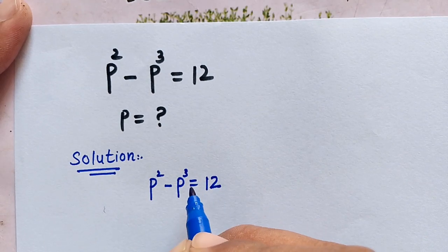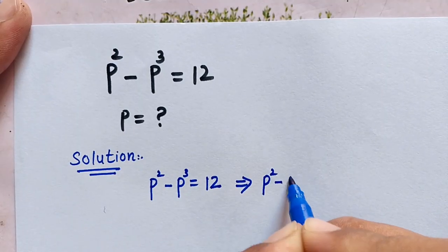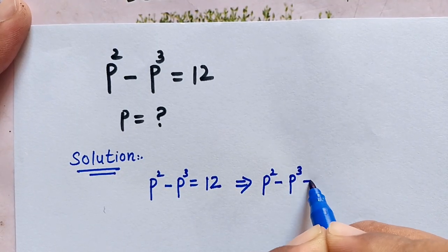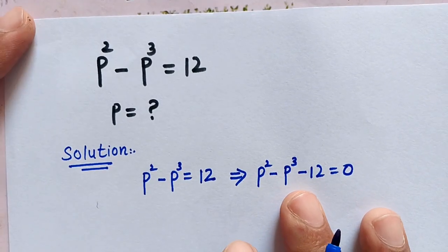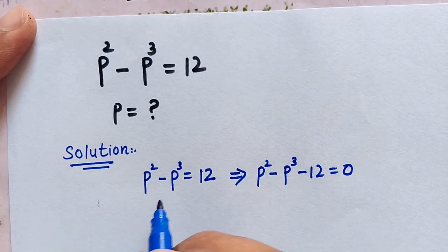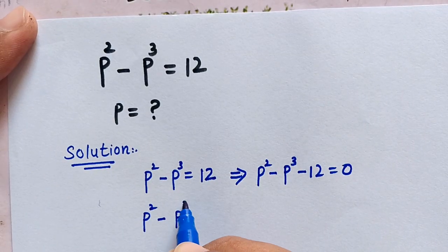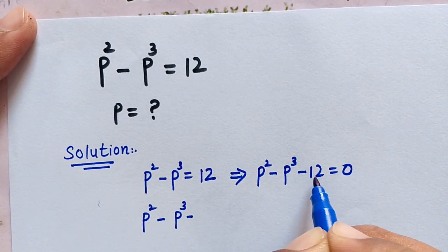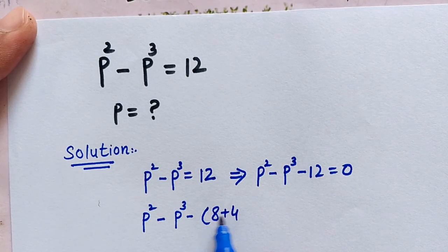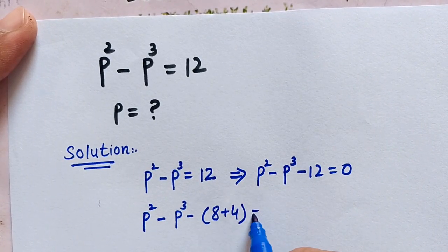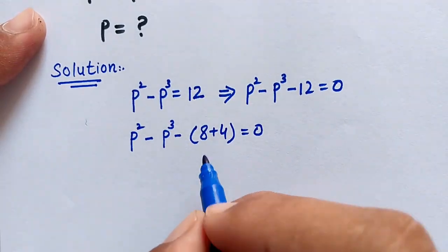To solve this interesting question, we have to move 12 to the left side, so this will become p squared minus p to the power of 3 minus 12 is equal to 0. Now in the next step, p squared minus p to the power of 3 minus 12 is also equal to negative 8 plus negative 4, since 8 plus 4 equals 12, and this is equal to 0.